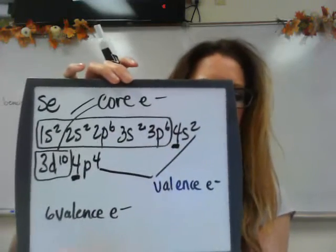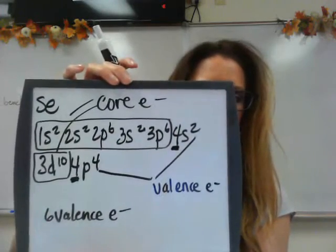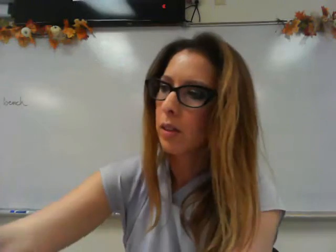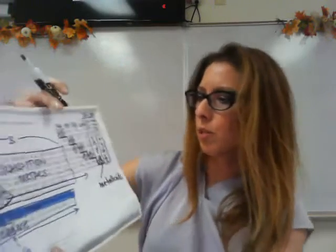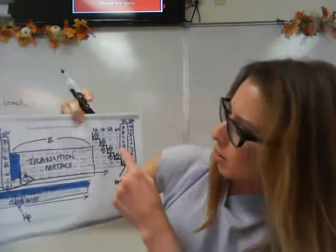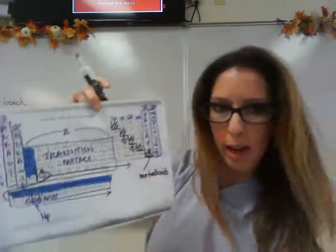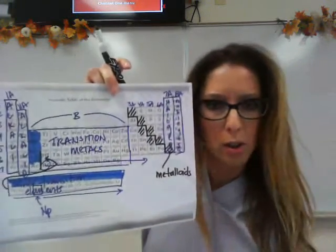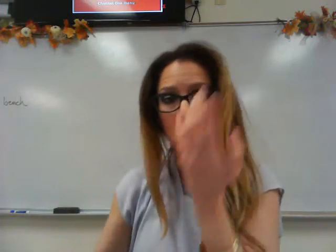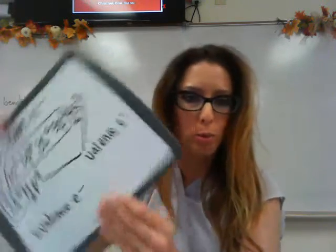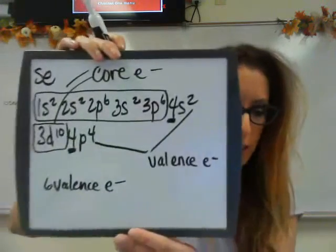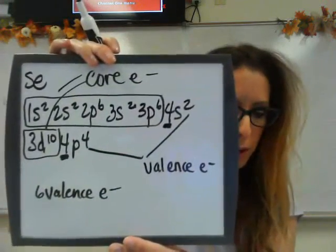Looking at Se on the periodic table, it's in group 6A, so it has 6 valence electrons — which matches what we just calculated.